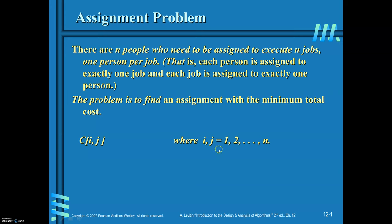For this problem, the input is in matrix format. Cij indicates whenever person i is assigned with job j, the cost is given in the cost matrix, where i and j can take values from 1 to N.